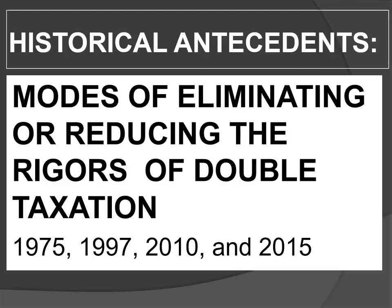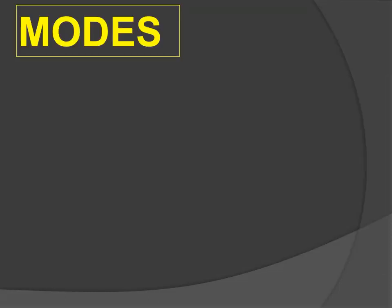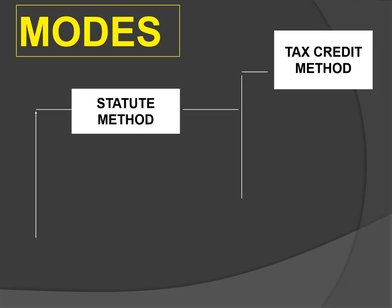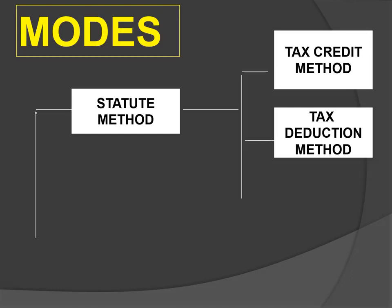Let's have a look at the modes. There are two modes. The statute method — which is present in our code right now — allows for tax credit of foreign taxes paid. In short, the foreign taxes paid are allowed to be deductible from the income tax due to the Philippine government, if the taxpayer signifies in his return that he wants to avail of the tax credit method. On the other hand, there's another method under the tax code known as the tax deduction method. Under the tax deduction method, the taxpayer does not state in his return that he wants to use the tax credit method, and therefore he could use the foreign taxes paid as a deduction from his gross income in order to arrive at income subject to tax.